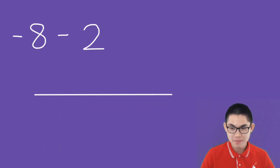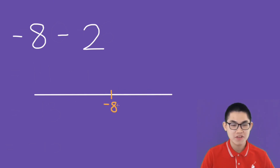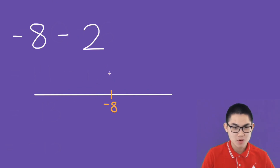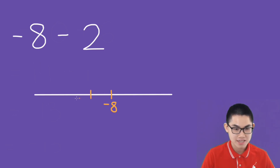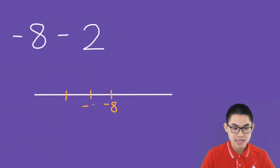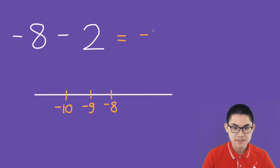What is negative 8 minus 2 using the number line? We draw the number line and start at negative 8. Which direction are we moving — right or left? Well, it's minus, so we move to the left 2 times: 1, 2. Negative 8, over here is negative 9, then negative 10. So the answer is negative 10.